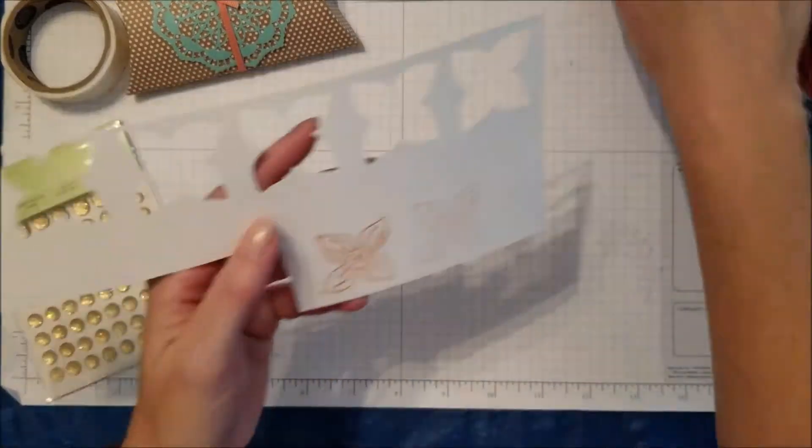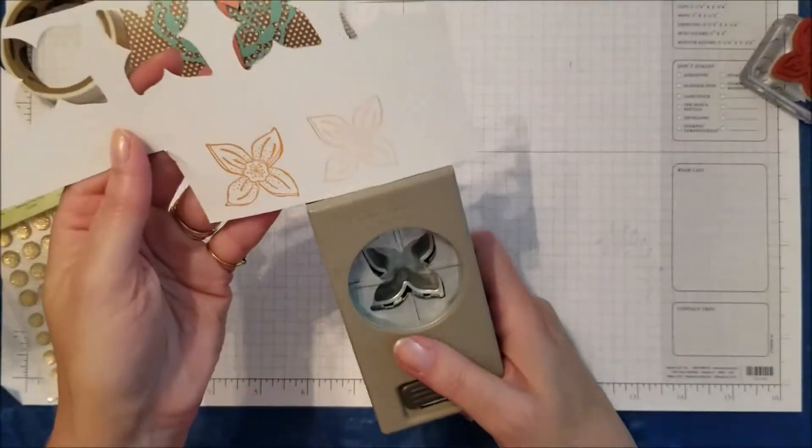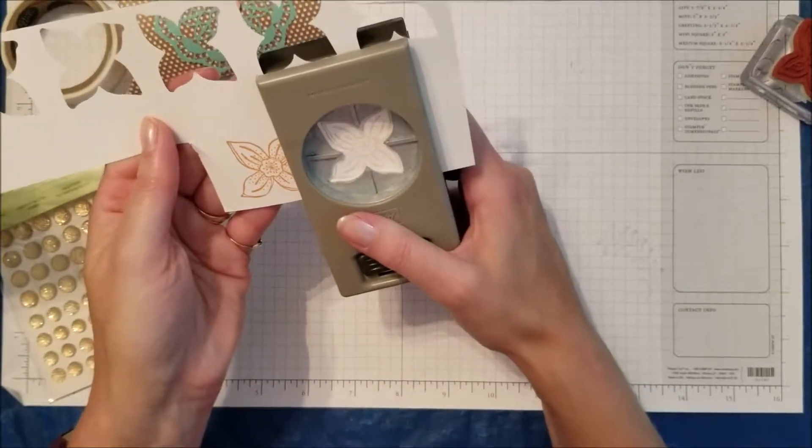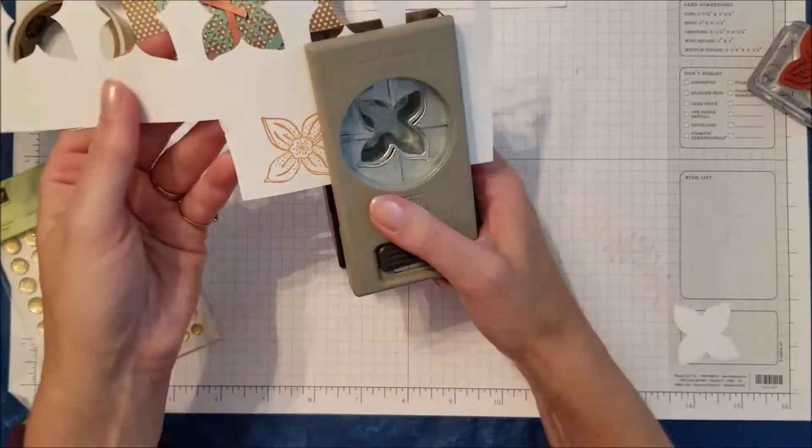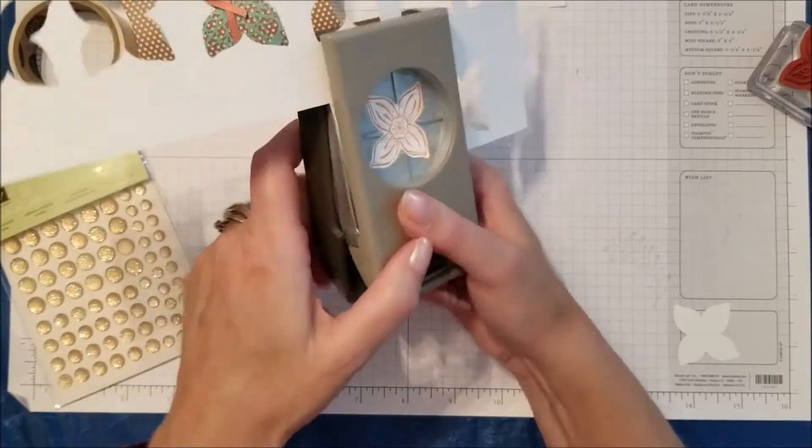Now you'll see when I'm getting ready to use my punch, it lines up perfectly. The shape of the petals are all in the right spot so that I can very easily punch out my flower.